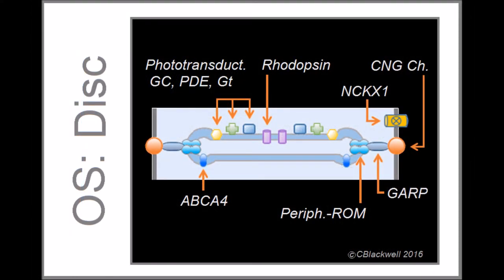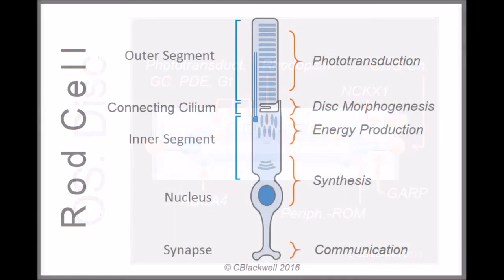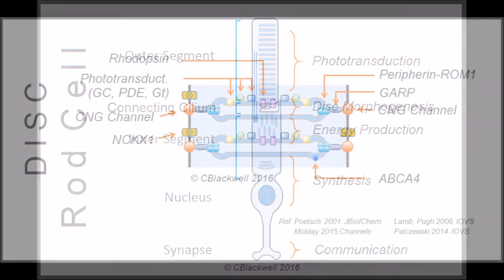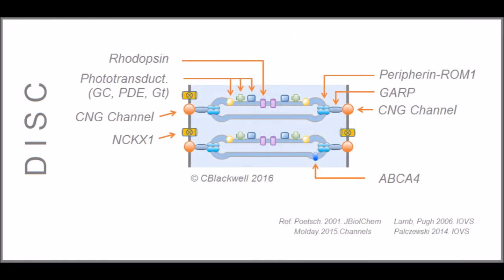The defining feature of the outer segment is the discs that fill it. The discs contain the phototransduction apparatus that senses and responds to light, the reason for its existence. This diagram shows most of the main molecules important for a disc/photoreceptor function. For phototransduction to work correctly, all these need to be here and in this configuration.